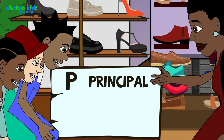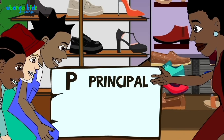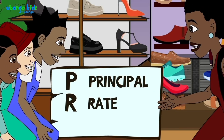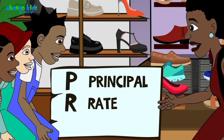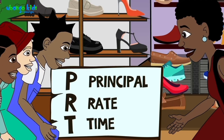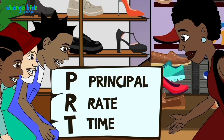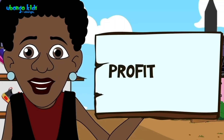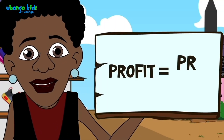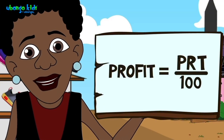P is the principal, which is the amount of money you're putting in the bank. R is the interest rate. And T is the time you're investing your money for. So don't forget: profit is P.R.T. divide by 100.